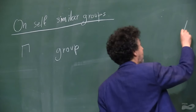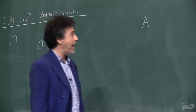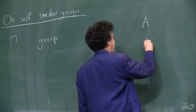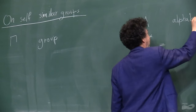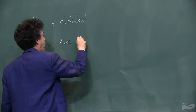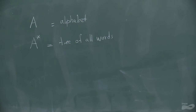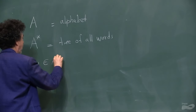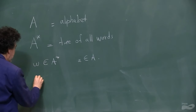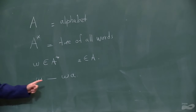Start with A, a finite set, and in this theory a finite set is called an alphabet. Then A-star will be the tree based on A of all words with letters in A. And how to make it a tree is the following: if you have a word W and a letter A, then you just connect W and WA — these are the edges in the tree.